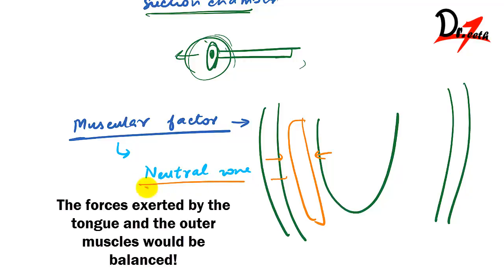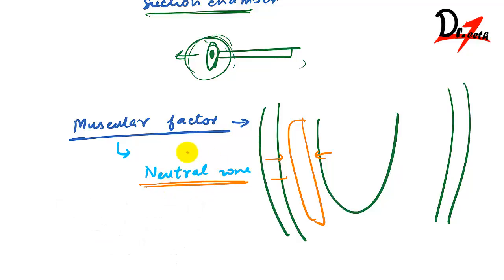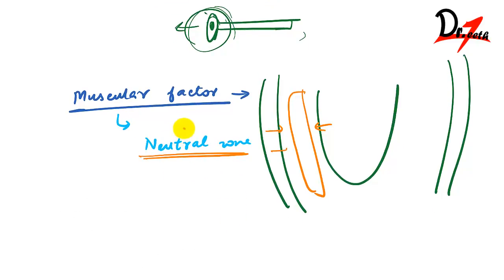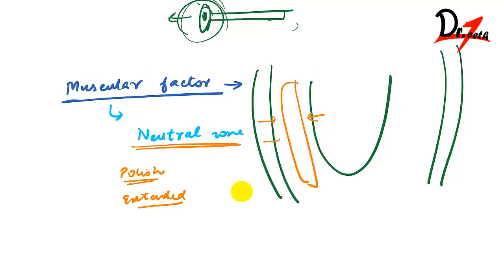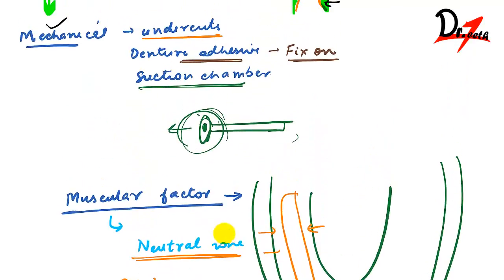First factor: setting the teeth in the neutral zone. Then, the polished surface of the denture should be properly contoured. The denture base must be extended to cover maximum area, and the occlusal plane must be at the correct level.